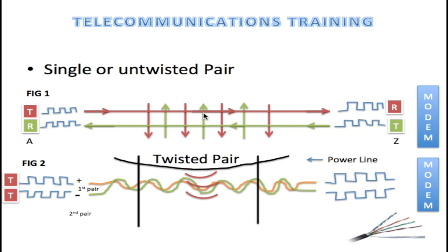What we have is two single lines. The red line carries data transmitting from A to Z, and the green line carries data back from Z to A. When data is transmitted from A to Z, we have a digital signal — really two voltages, say zero and five volts and back to zero. This change in voltage causes a change in current on the wire, and this changing current generates an electromagnetic field. That electromagnetic field then induces a voltage into the parallel wire — the green line going from Z back to A — and this induction becomes noise.